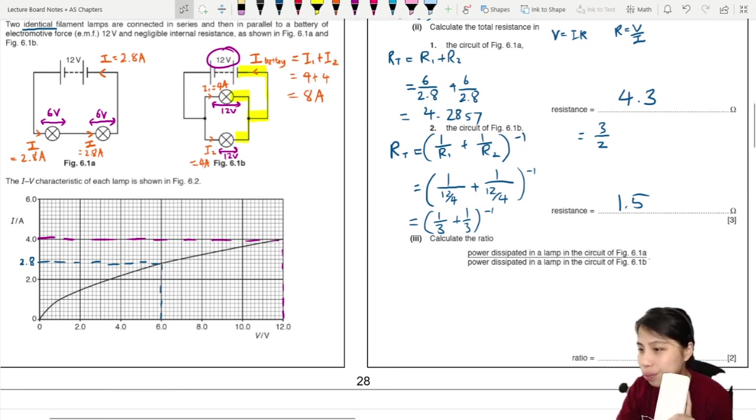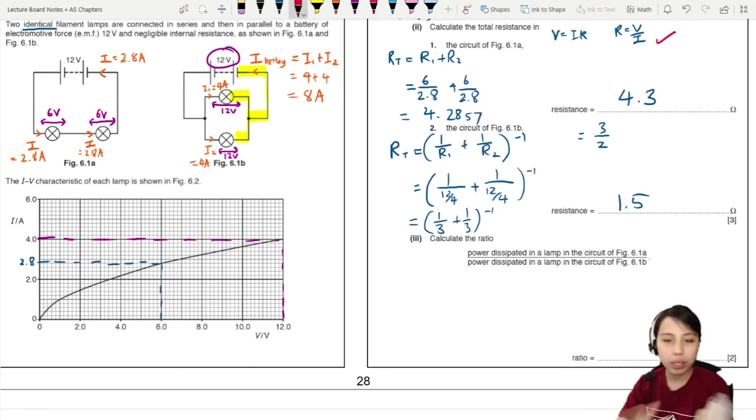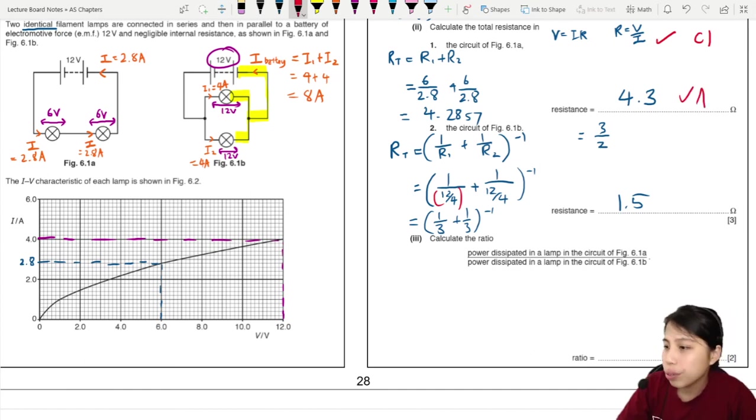So first mark is if I see that you got used the V over I, whether all in one calculation like this or written explicitly, that's okay. And then you get your values 4.3 ohms, that's the first one. And 1.5, that's the second one.